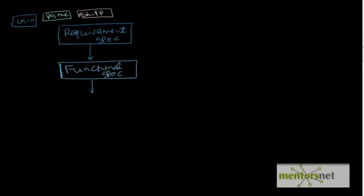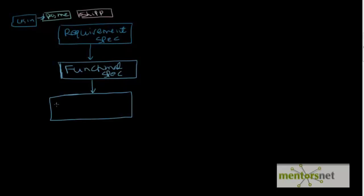After the functional spec is in place, we come up with design decisions — like what is the architecture of the system, what kind of software and hardware we are going to use, what database we are going to use to store persistent data, and whether we are going to use any caching mechanism. In the design spec we also define the APIs and interfaces between different modules.